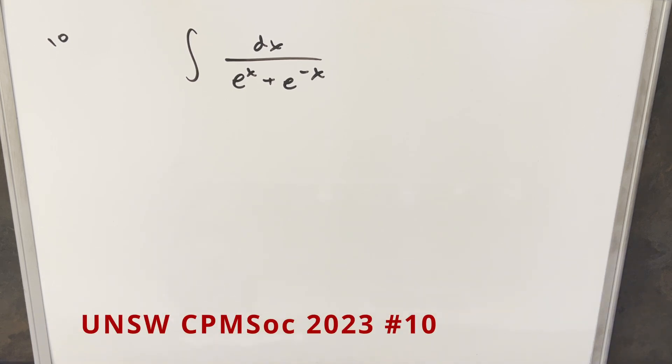We have here today a really quick integral from the UNSW CPMS Integration B 2023, problem 10. We have the integral of 1 over e to the x plus e to the minus x dx.